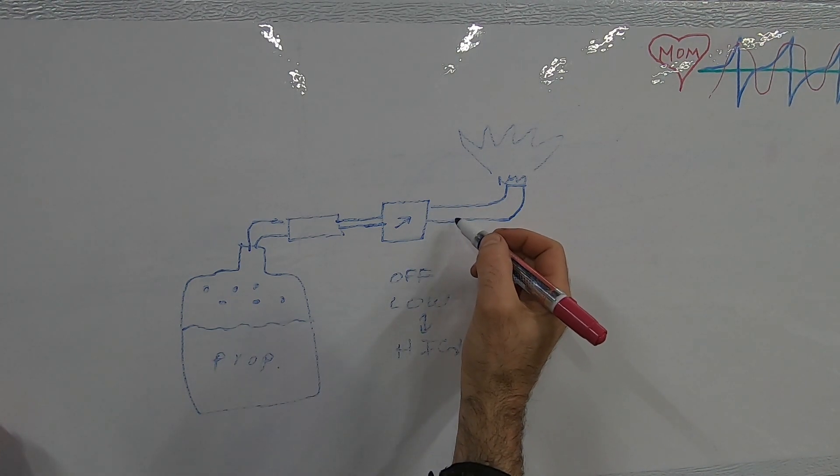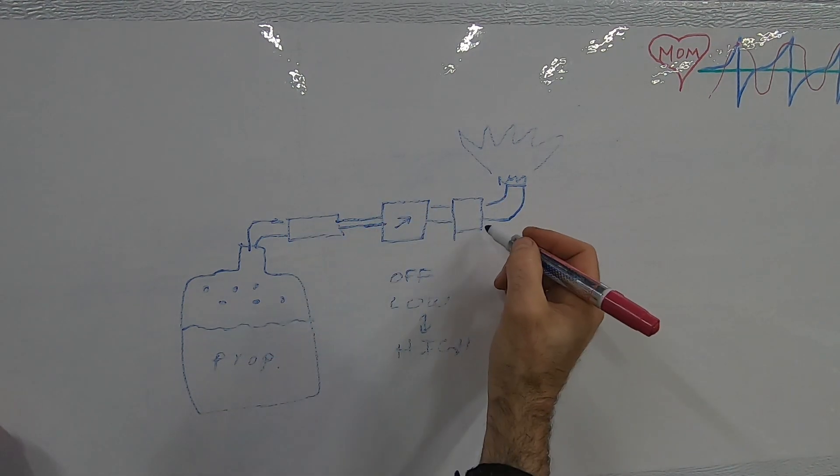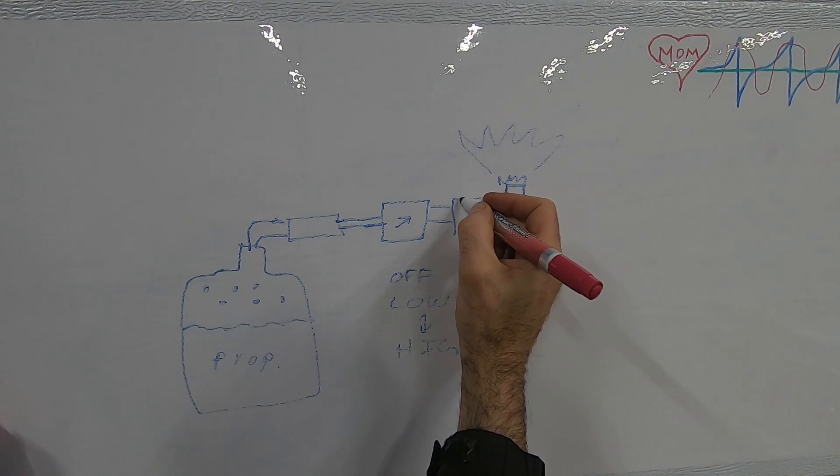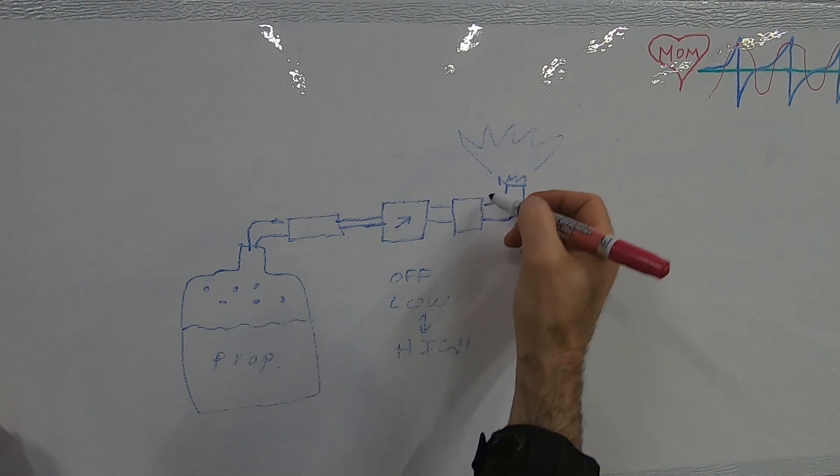So what this particular heater and many like it have is there's a valve between the output of the hand control and where the fuel comes out, and it's an electrically controlled valve. So when there's no electricity applied to the valve, it's closed and the propane will not flow.